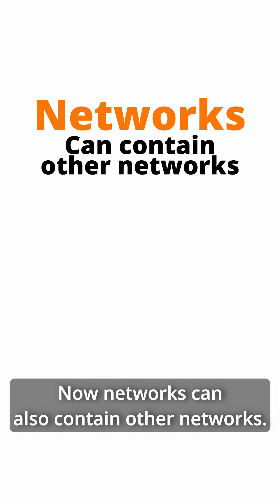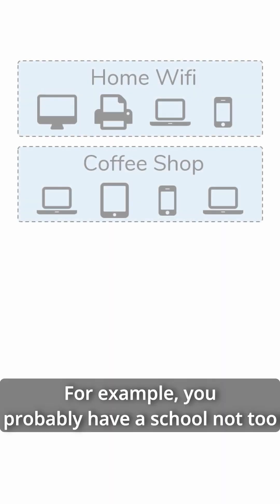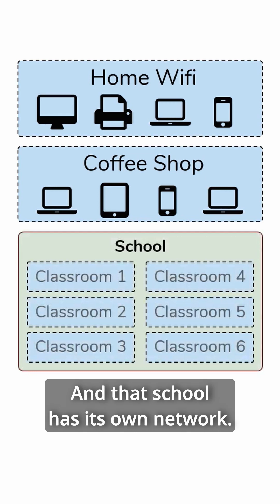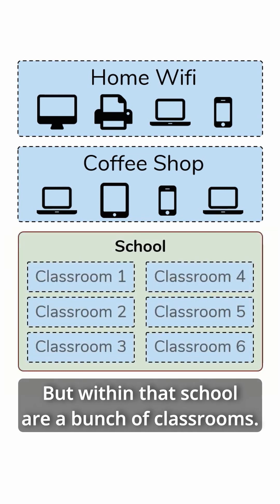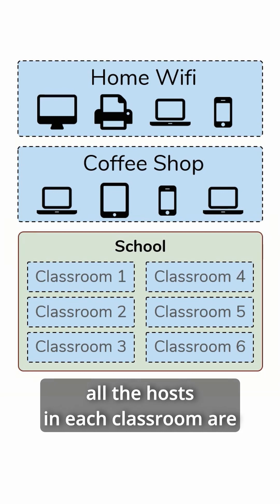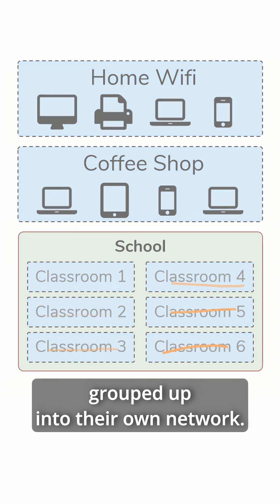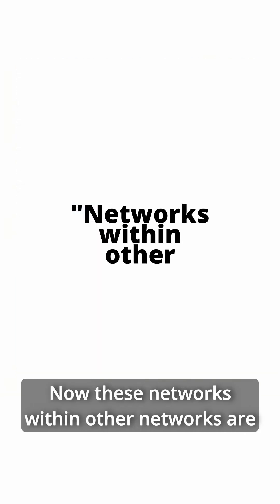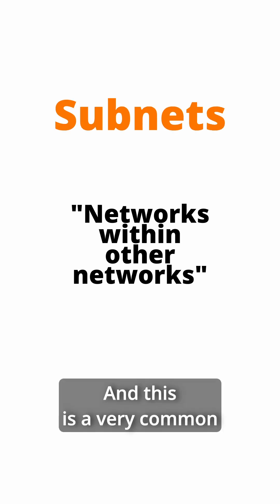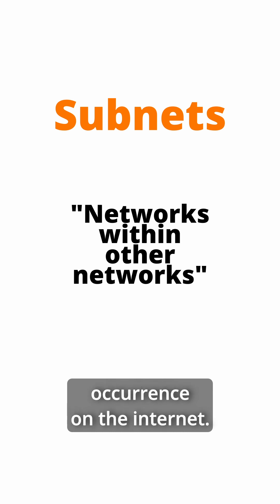Now networks can also contain other networks. For example, you probably have a school not too far from where you live, and that school has its own network. But within that school are a bunch of classrooms. It's very possible that inside each of those classrooms, all the hosts in each classroom are grouped up into their own network. Now these networks within other networks are sometimes referred to as subnetworks or subnets, and this is a very common occurrence on the internet.